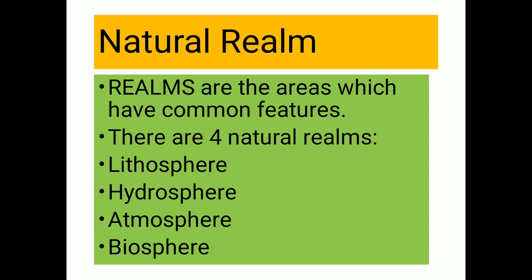They are lithosphere, hydrosphere, atmosphere, and biosphere. What is lithosphere? Lito means rock in Greek language and sphere means earth. So the part of the earth which is covered with rocks, mountains, and similar features is called the lithosphere. Second one is hydrosphere.